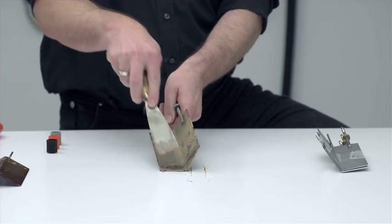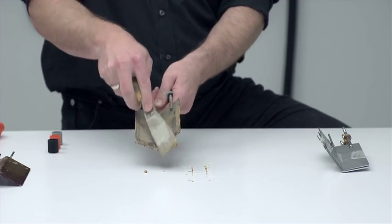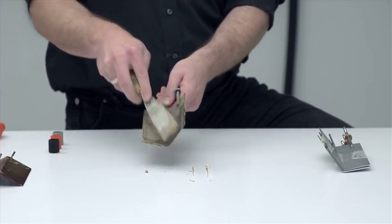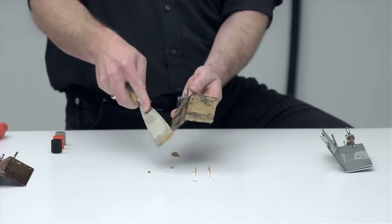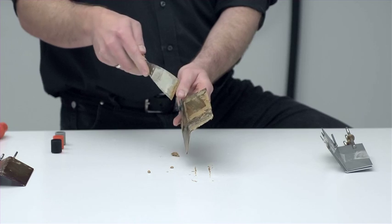To clean, I will now take the putty knife and simply scrape off the deposits. This here works quite easily. It could be a bit more difficult at times in which case you would have to go at it a bit harder, which is not a problem. The electrodes can withstand it.